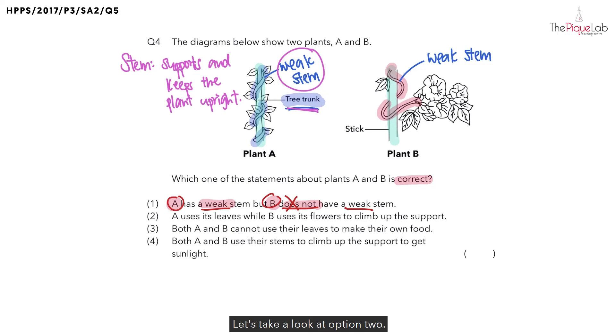Let's take a look at option 2. Option 2 mentioned that A uses its leaves while B uses its flowers to climb up the support. If you take a look at what I have highlighted in blue and what I have highlighted in red at the diagrams on top, can you tell me the plant uses which plant part to climb up the tree trunk and the stick? It is using its stem and not the leaves or the flowers. So statement 2 is incorrect.